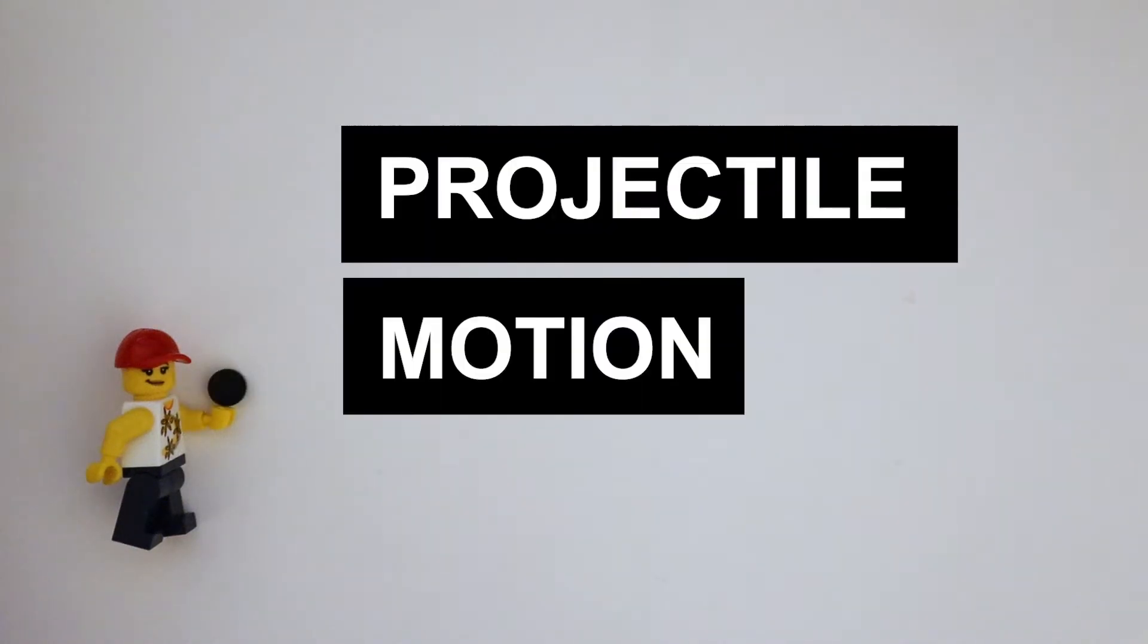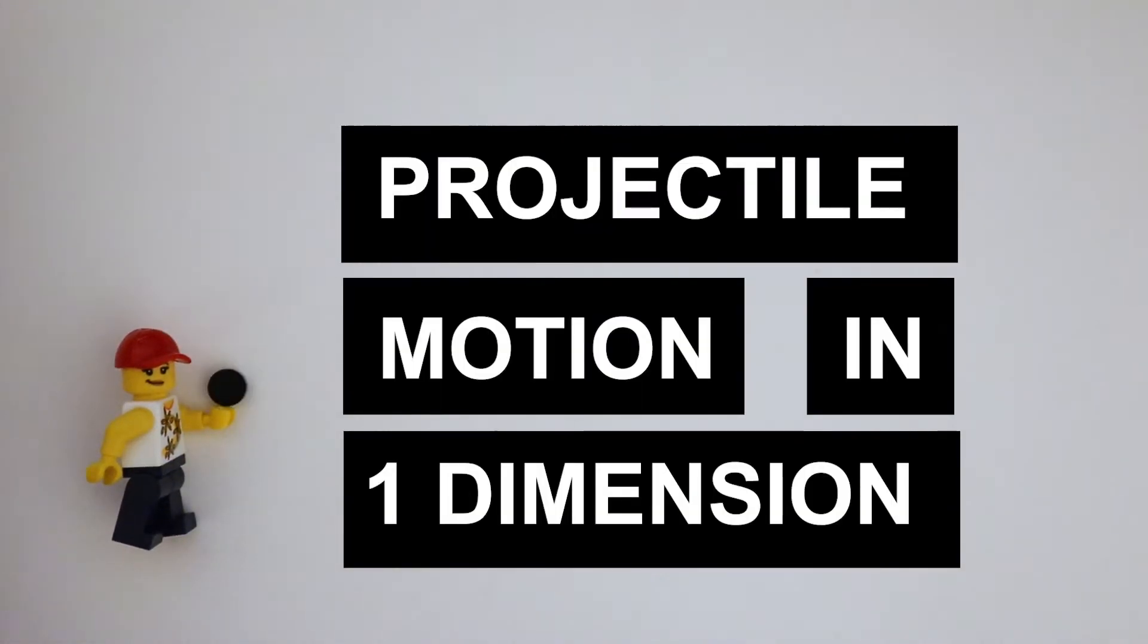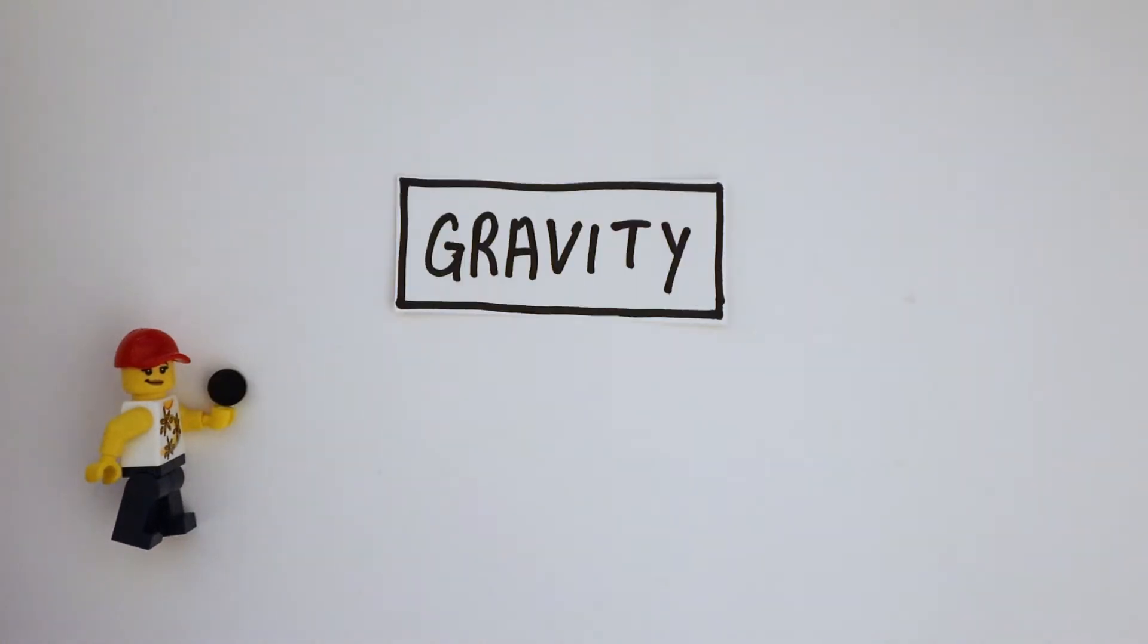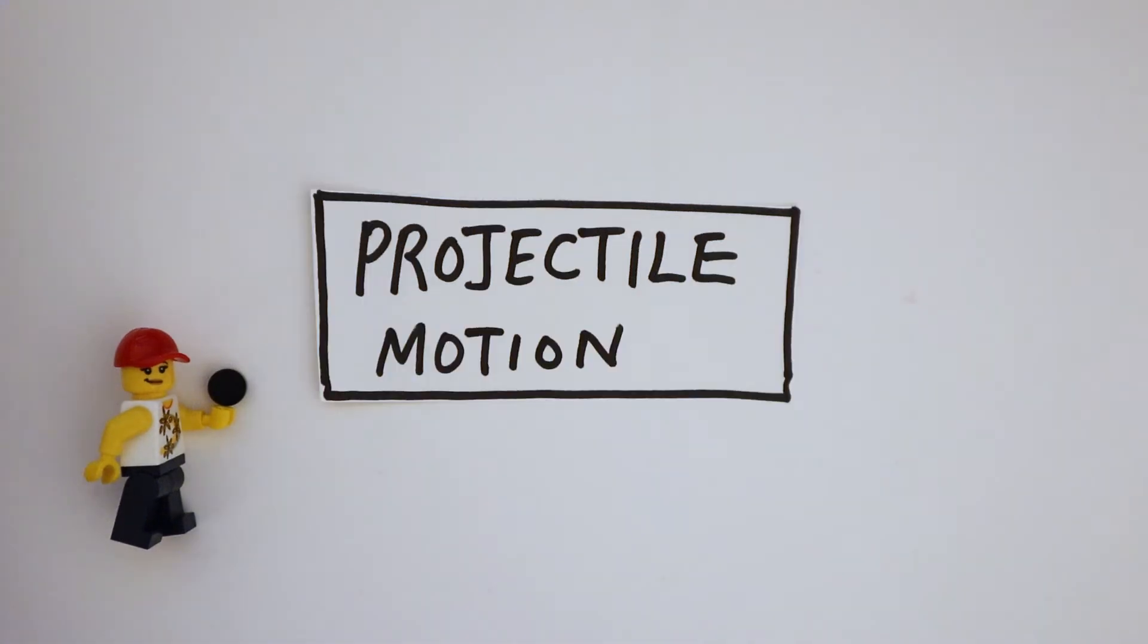If I throw a ball vertically upwards, it's pretty natural for me to expect it to drop back into my hand at some point thanks to gravity. Such motion under the influence of gravity is known as projectile motion.